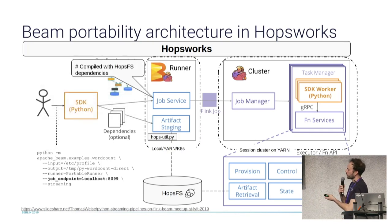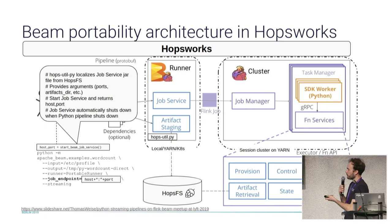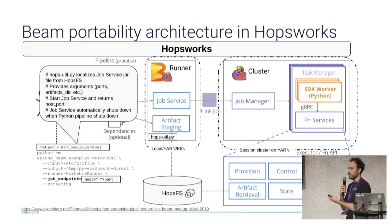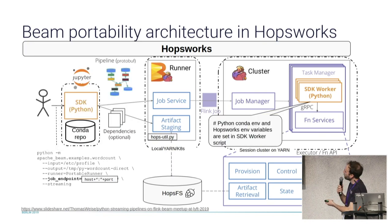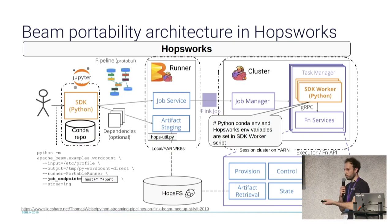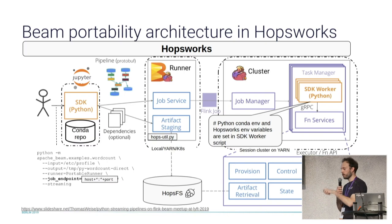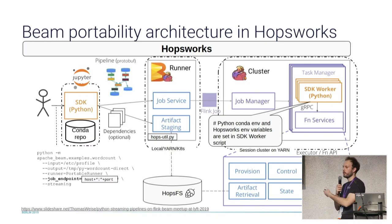Instead of starting the job service manually from the command line, you have a helper method where you start the job service — it runs somewhere in the cluster — and get back the address of the job service, which you can use later when you define your Beam pipeline. The important part is that the SDK worker, the Python one in this case, will use the Conda environment found locally on each machine — the Conda environment of the project for which this job is running. The Flink session cluster in Hopsworks is just a job.